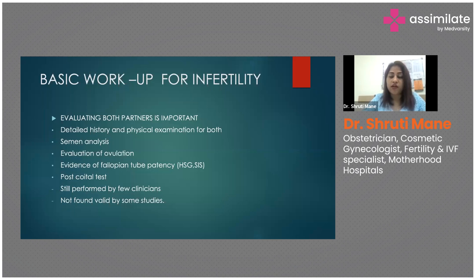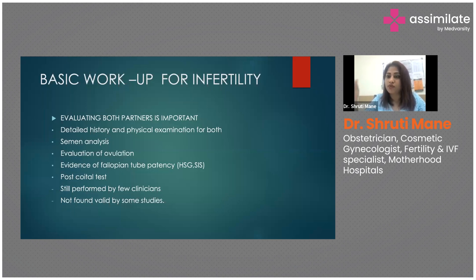To evaluate ovulation, you can ask the patient to check her basal body temperature, use LH kits (ovulation kits), or apply the calendar method — averaging the last six menstrual cycles. Since the last 14 days are constant, in a 28-day cycle she ovulates around day 14. You can then advise intercourse from day 10 to day 18 on alternate days.